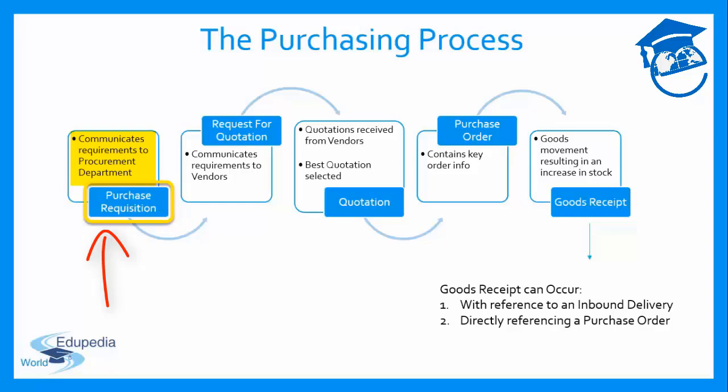The purchase requisition is an interdepartmental form of communication, meaning one department is communicating to the procurement department a list of requirements that may need to be procured externally. Once the procurement department receives it, they create a request for quotation (RFQ), which is the second stage. The RFQ communicates those requirements to the vendors.